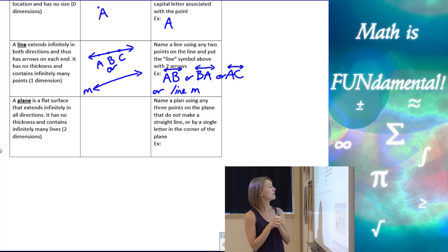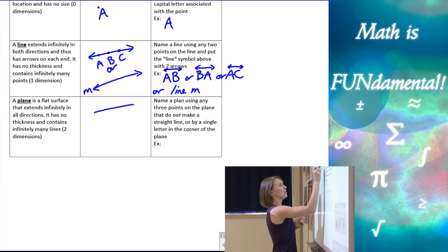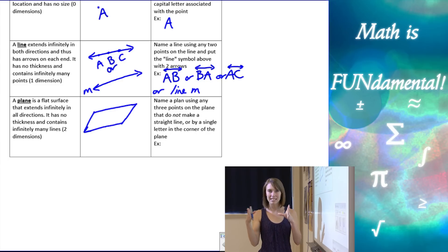Next vocab term is a plane, and a plane is a flat surface that extends infinitely in all directions, which is going to be a little misleading, because when we see what a plane looks like on our paper, it's going to look something like this, which looks like it has edges, but we have to remember it actually goes infinitely in all directions.